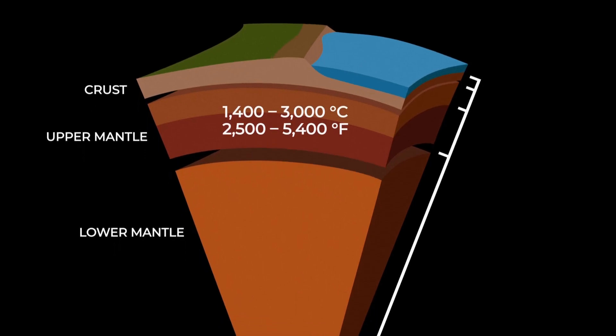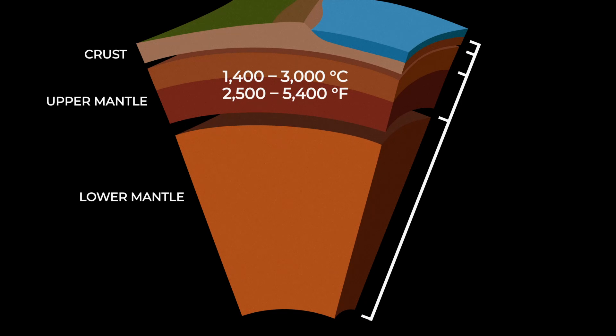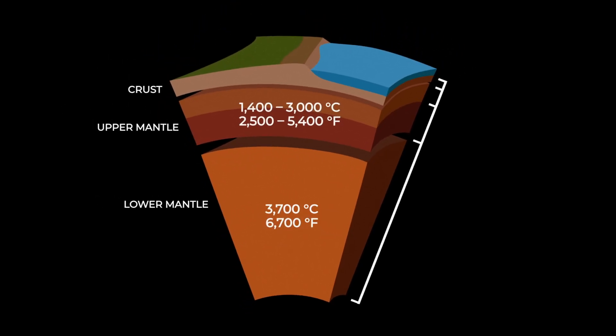The lower mantle, which rests beneath the upper mantle, reaches temperatures of 3700 degrees Celsius or 6700 degrees Fahrenheit. Though it's hot enough to melt rock, it doesn't. It stays solid because the pressure is too high to allow the rock to melt.